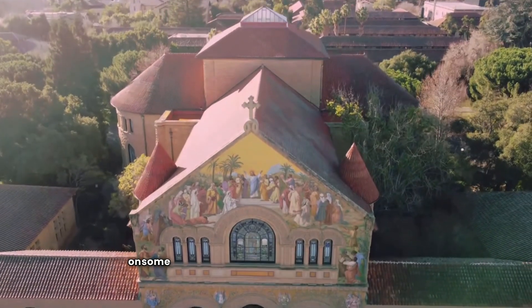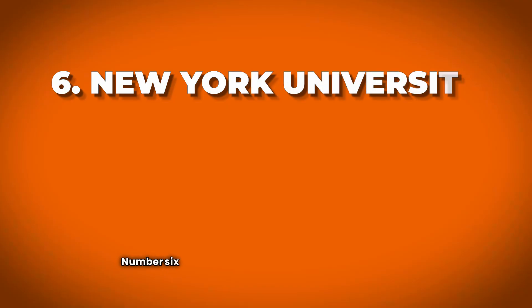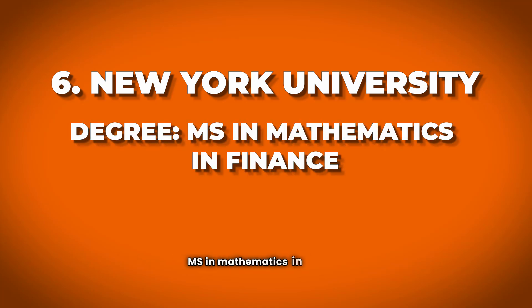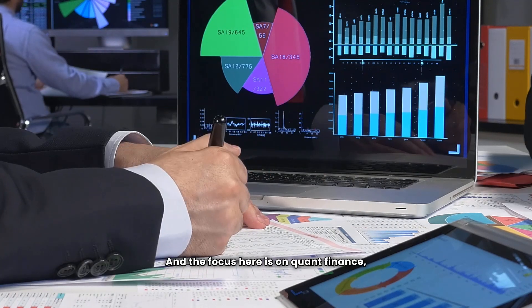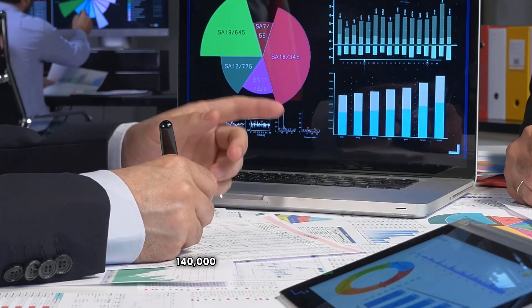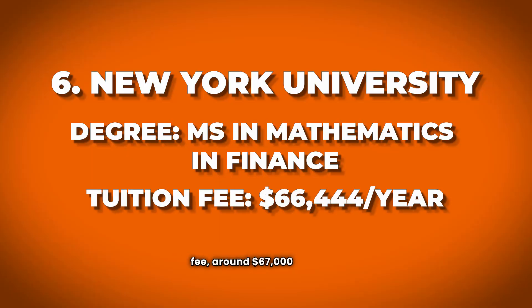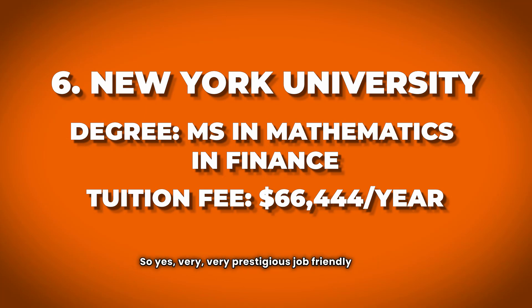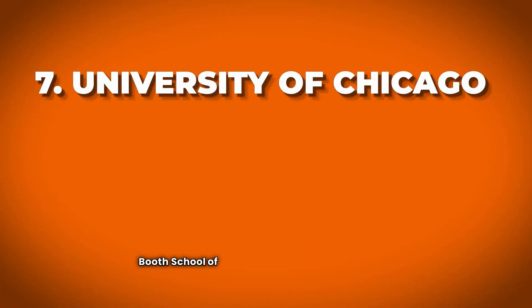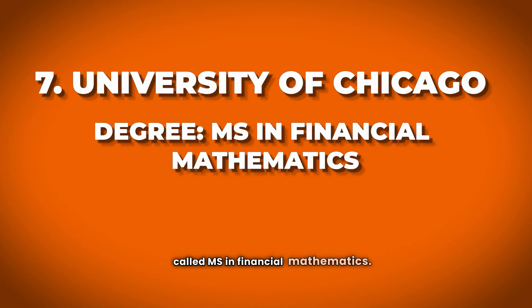Number six is NYU Stern School of Business and Courant, which together offer an MS in Mathematics in Finance. The focus includes quant finance, derivatives, machine learning, and algorithmic trading, with an average salary of $140,000 and tuition around $67,000 per year. Located closest to Wall Street, it's a very prestigious and job-friendly course — a dream school if you know how to leverage the location.